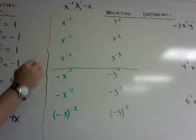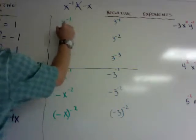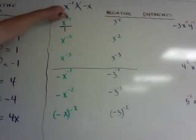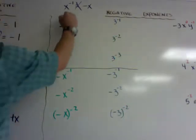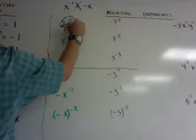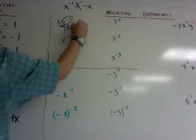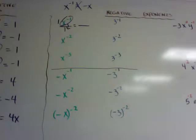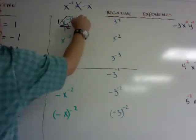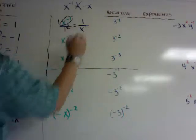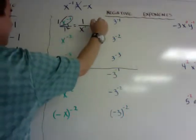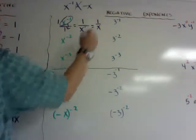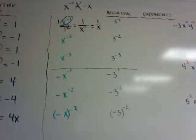x to the negative 1: you have to think of it as upstairs, downstairs. If I think of it as a fraction, if it's a negative exponent on the top, when you drop it down to the bottom it becomes positive. So when I take x to the negative 1 and move it downstairs, there's an invisible 1 up here so I leave the 1 on top. When I move x to the bottom, it becomes x to the positive 1 power. Negative 1 becomes positive 1, and simplified it's just 1 over x.